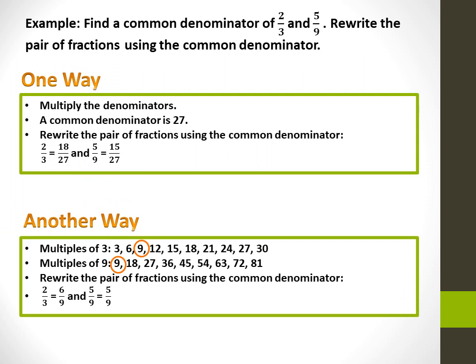Another way is to write a list of the multiples of 3 and the multiples of 9 and circle the common multiples. The common multiples of 3 and 9 are 9, 18, and 27. The least common one is 9. So rewrite both fractions with a denominator of 9: 2 over 3 is equal to 6 over 9, since you multiply the numerator and denominator by 3. And 5 over 9 remains the same.